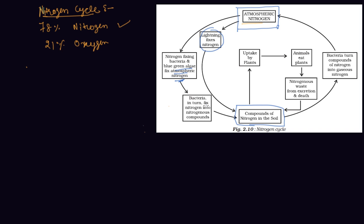Bacteria in turn fix Nitrogen into nitrogenous compounds. These compounds of Nitrogen are either taken up by plants, or bacteria directly convert compounds of Nitrogen into gaseous Nitrogen. Plants are eaten by animals, and Nitrogen wastes from excretion and death cycle back to the soil.